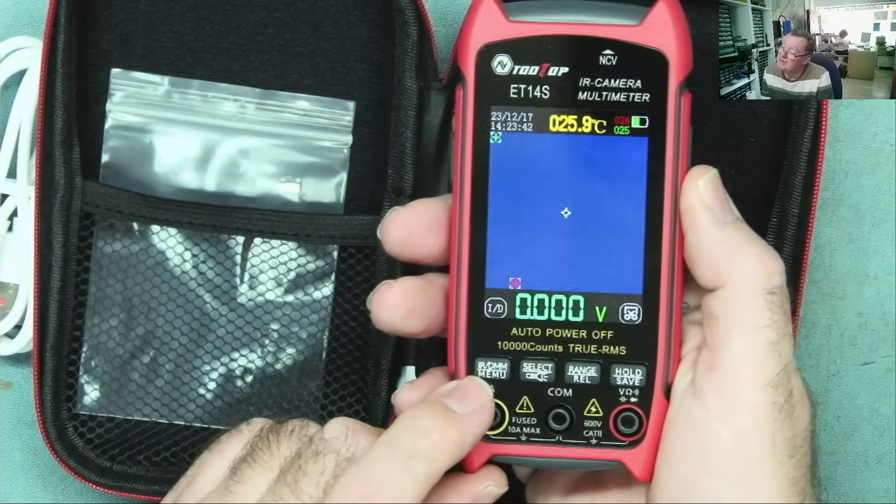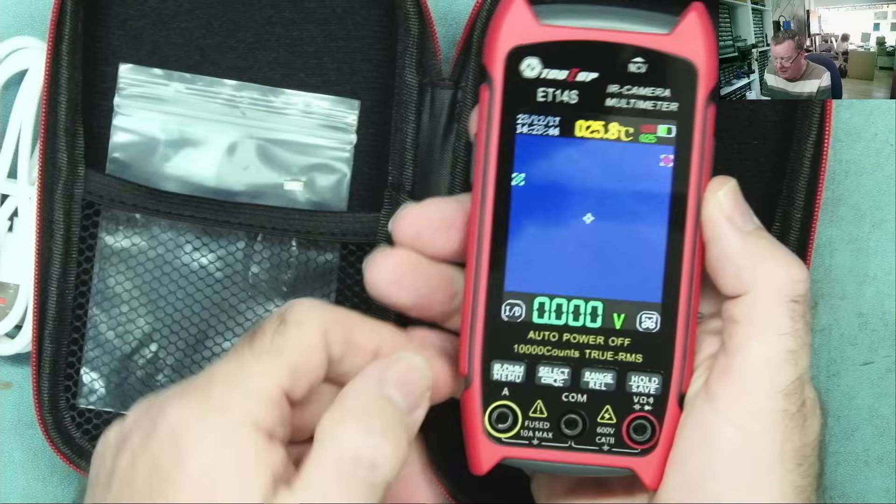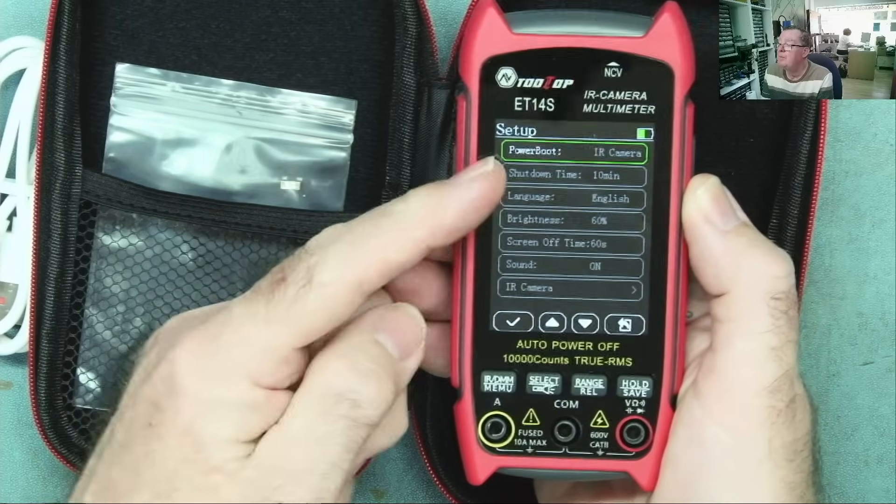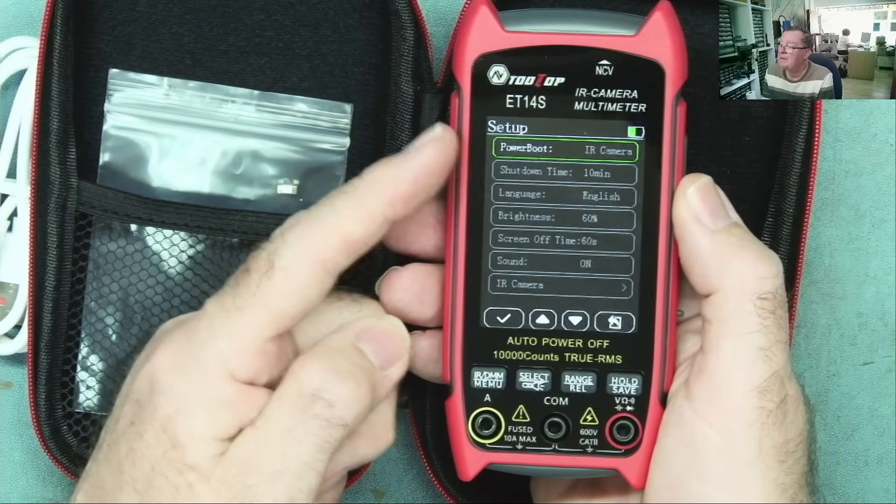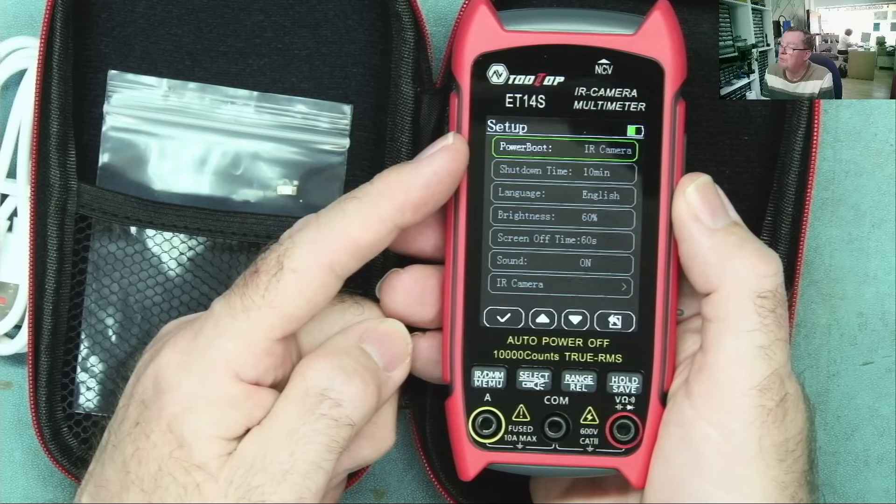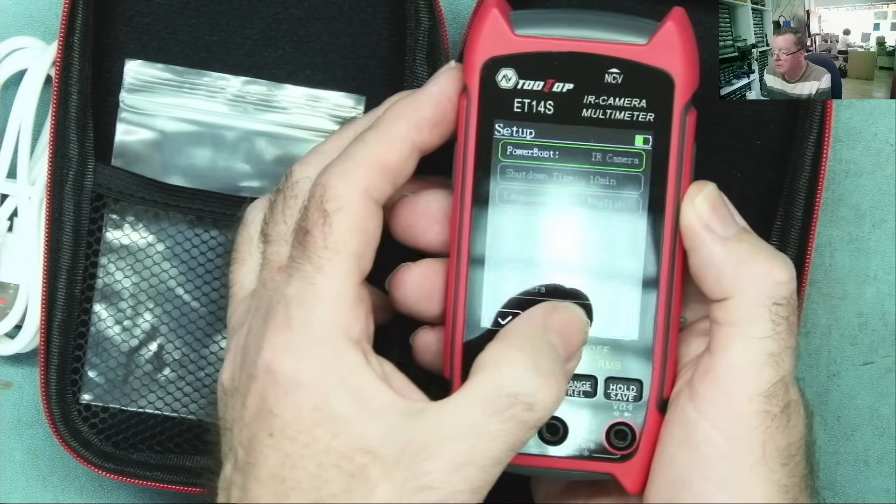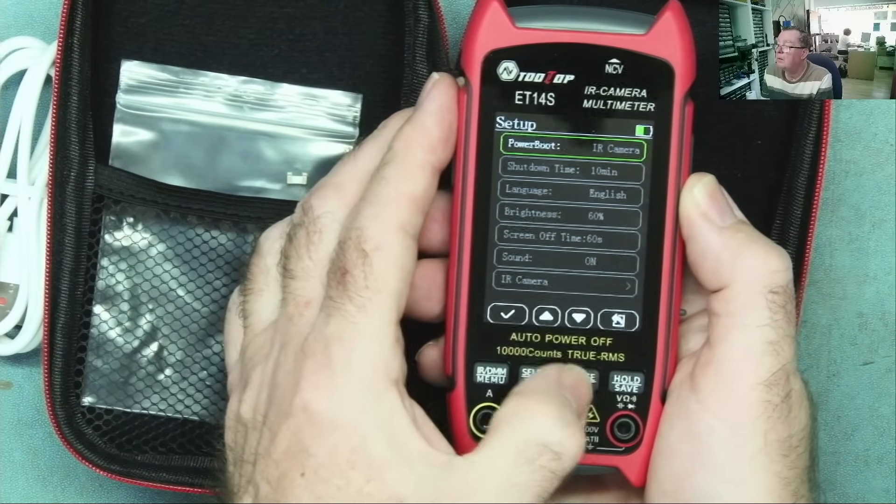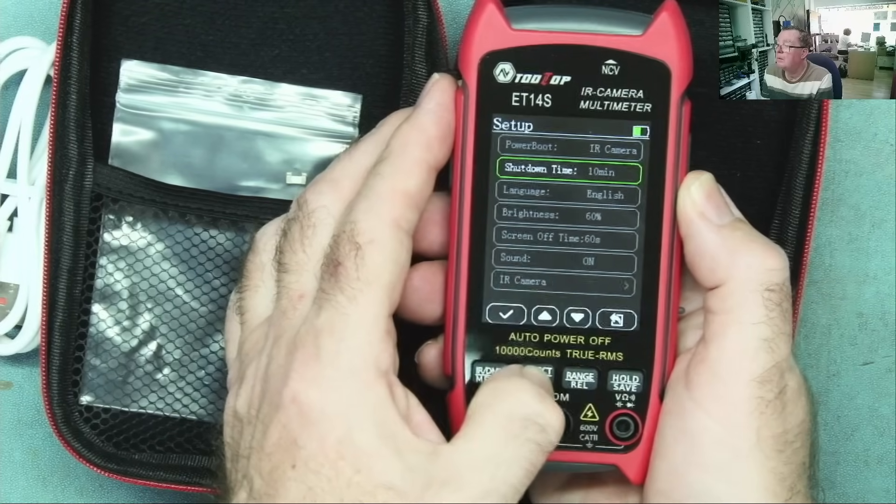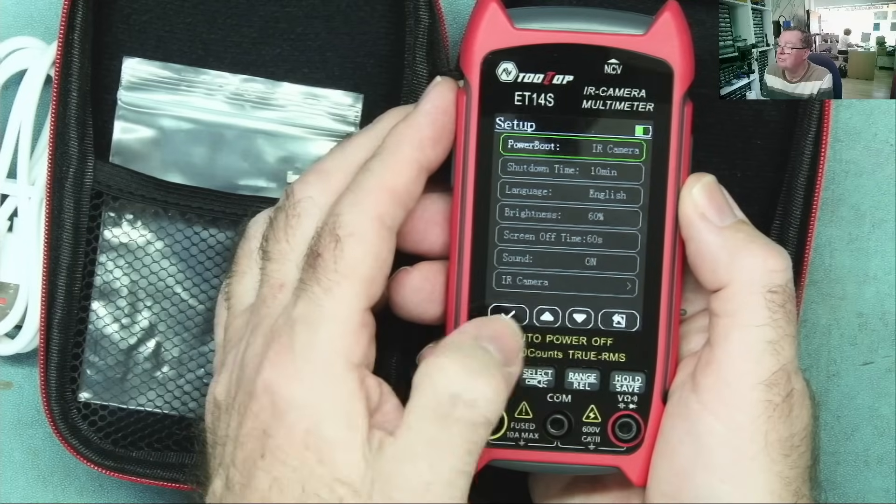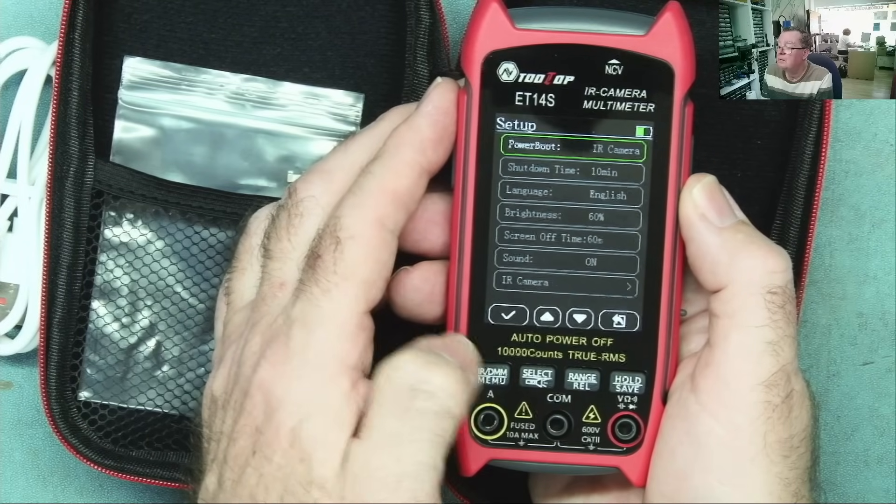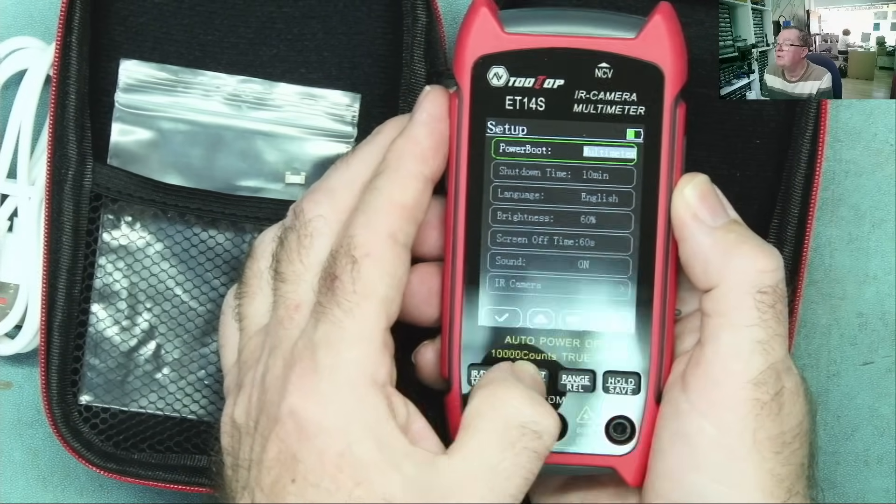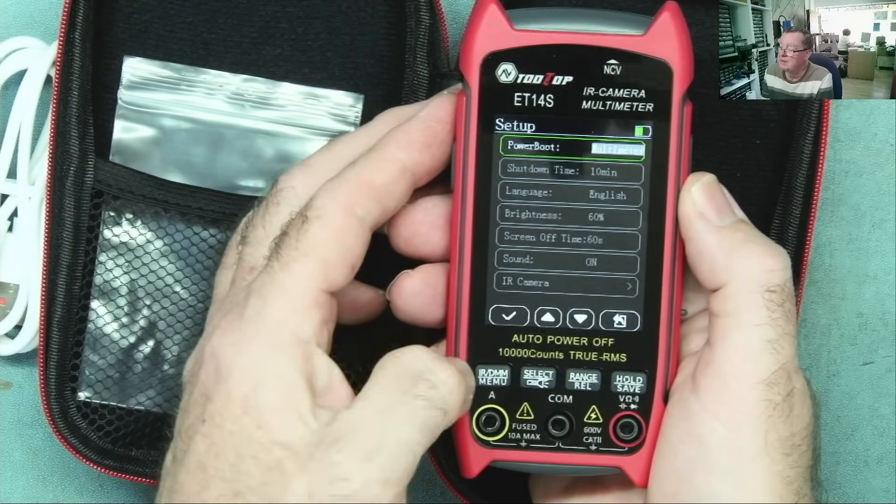I see, by the way, that menu is misprinted. There's memu or memu. I would imagine in here, though, we can actually change... Yeah. Power boot. So we can actually change that to boot to either IR camera or to multimeter. Yeah. Multimeter or camera. So we can set it to boot to either. That's quite nice.